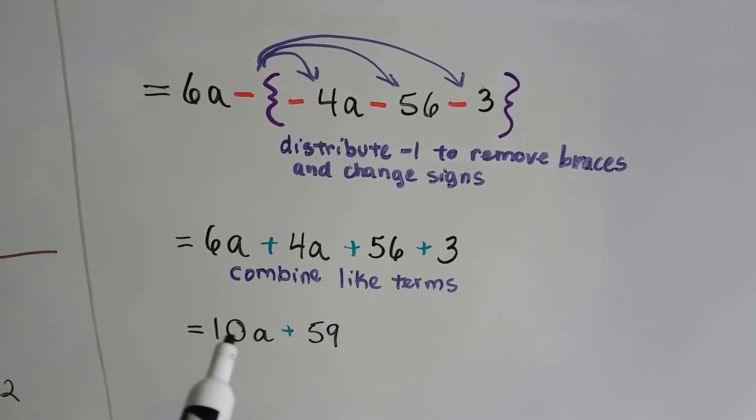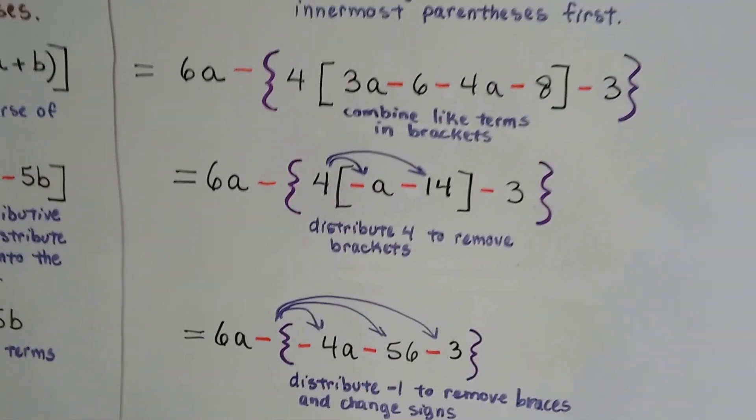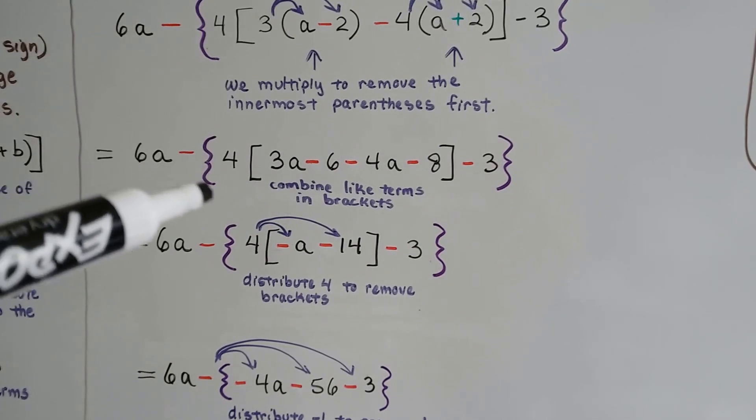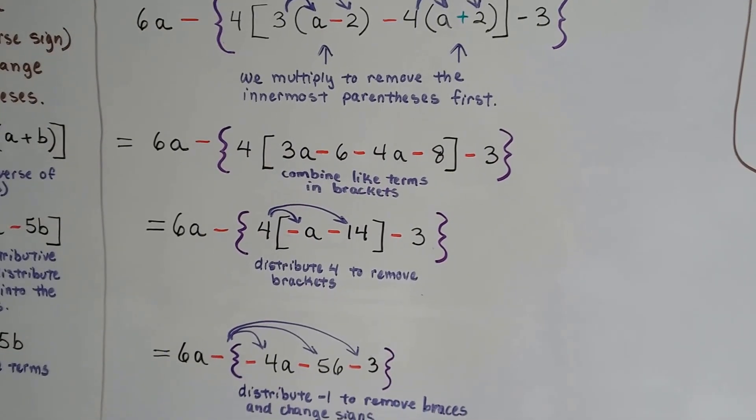So we use parentheses, we use brackets, these boxy things, and we use braces, these curly ones. Sometimes they're called curly braces. And just slowly kept distributing until we got in there.